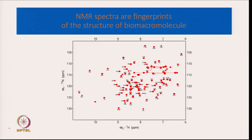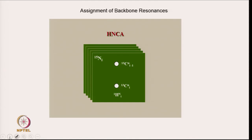NMR can also be used to study the structure of biomolecules such as proteins. NMR spectra are basically fingerprints of the structure of the molecule. Here we show HSQC where 15N is correlated with its attached proton for a protein, showing numerous peaks corresponding to amide nitrogen-proton correlations. Assignment is done using 3D experiments.